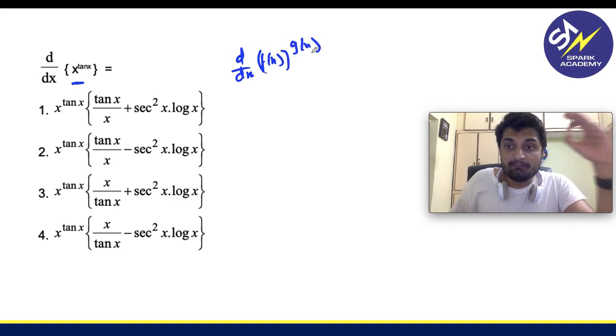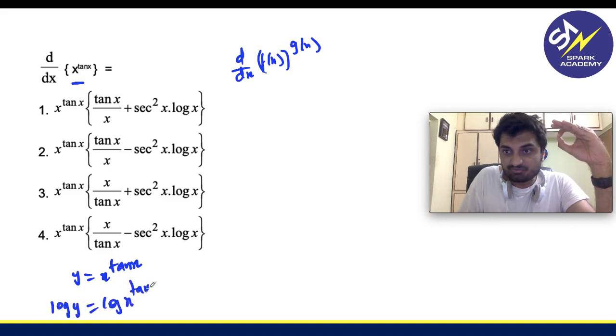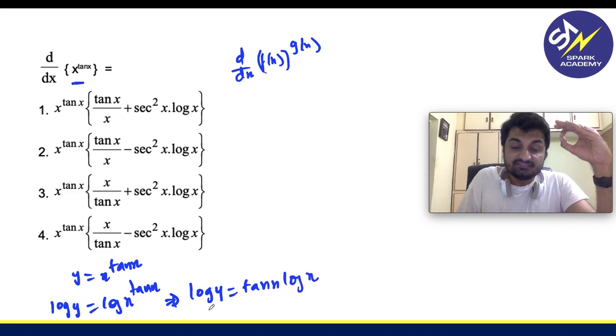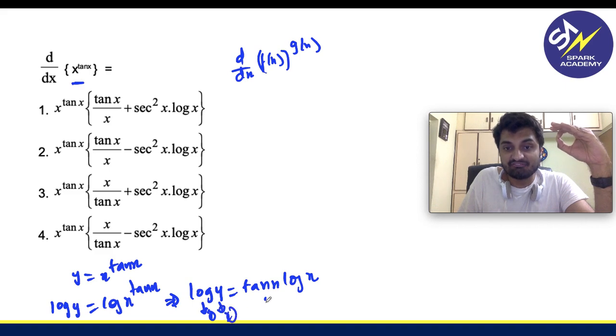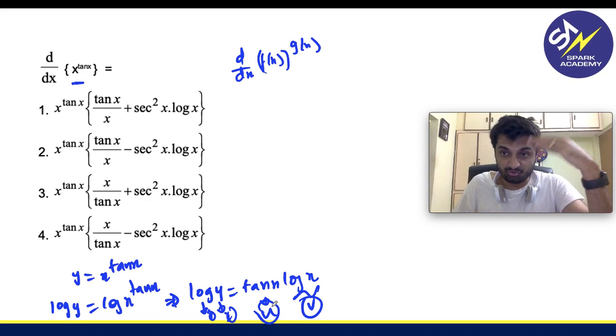So the actual method to solve is y equals to x power tan x. So you apply logarithms on both sides. So log of x power tan x, this implies that log y equals to tan x log x. Then you have to differentiate, give it one, give it two, give it u, give it v, differentiate, simplify. So it will take four to five steps.